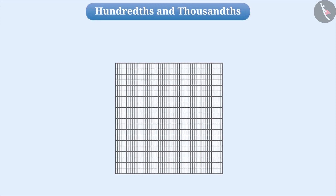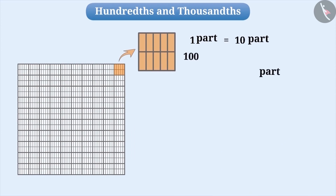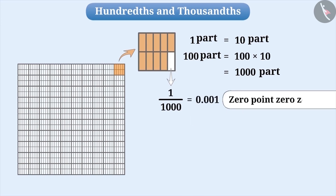Just think — if we divide each part of the 100 parts into 10 equal parts, then how many parts will there be in total? One part contains 10 parts, so 100 parts contain 100 into 10, which is equal to 1000 parts. If we take one part from these thousand parts, that part becomes one thousandth of the whole square. We express it as 0.001. Therefore, the third place to the right of the decimal point is one thousandths.